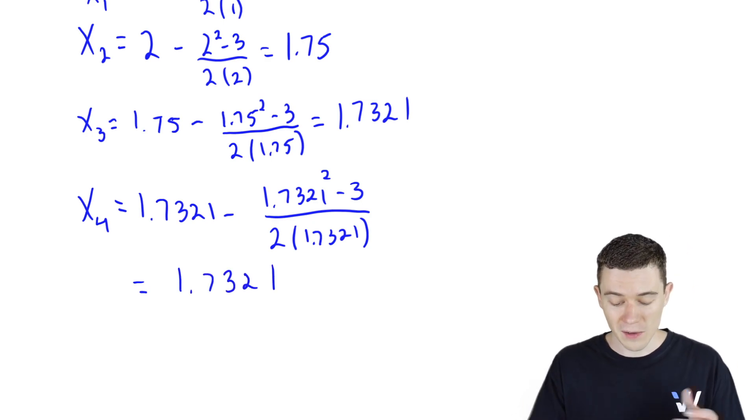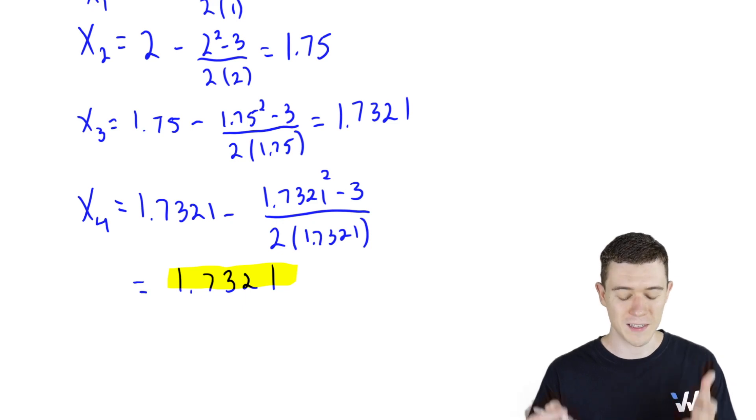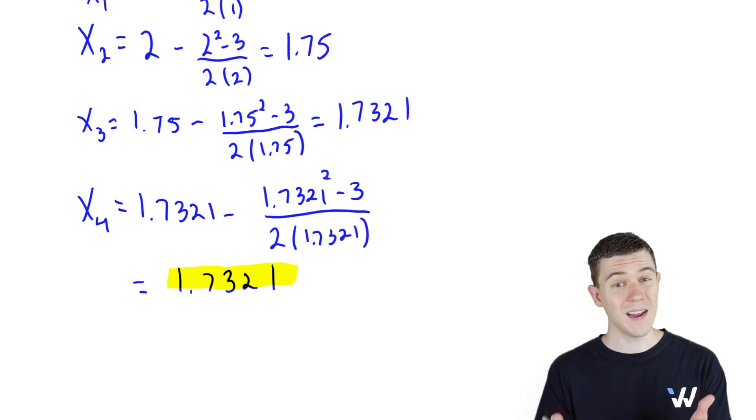So we found this value one point seven three two one. So this is the best Newton's method can do up to four decimal places, since we're not getting a different result. In actual fact, square root of three does equal one point seven three two and so on, so Newton's method works pretty well.